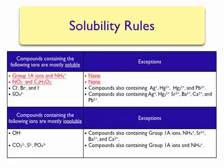We can use these solubility rules to predict whether or not an ionic compound is soluble in water. You are asked to memorize the first two solubility rules: that all Group 1A ions, ammonium ions, nitrate ions, or acetate ions in ionic compounds will cause that compound to be soluble in water.